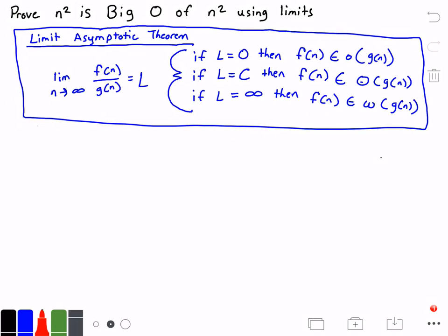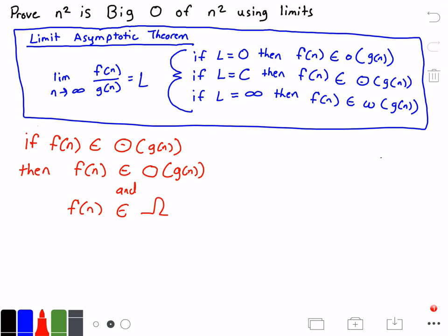Let me explain: if we have a function F(N) that belongs to big theta of another function G(N), then F(N) also belongs to Big O of G(N), and F(N) belongs to big omega of G(N).